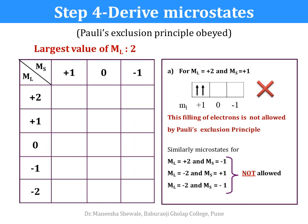One by one we can now write down the microstates. It is important that Pauli's exclusion principle must be obeyed. For the highest value of ML = plus 2 and MS = plus 1, both electrons would be filled in the orbital with ML = plus 1 and both with spin plus half. This filling is not allowed by Pauli's exclusion principle. Hence there will be no microstate for ML = plus 2 and MS = plus 1. Similarly, there are no microstates for ML = plus 2 with MS = minus 1, ML = minus 2 with MS = plus 1, and ML = minus 2 with MS = minus 1.